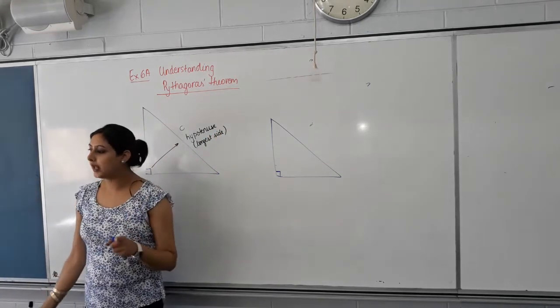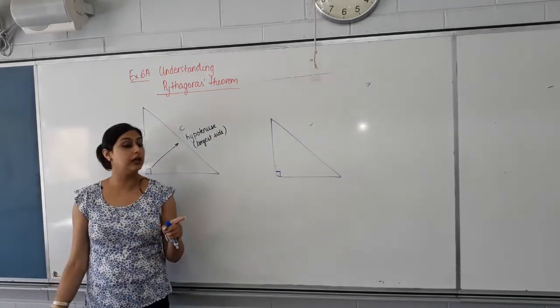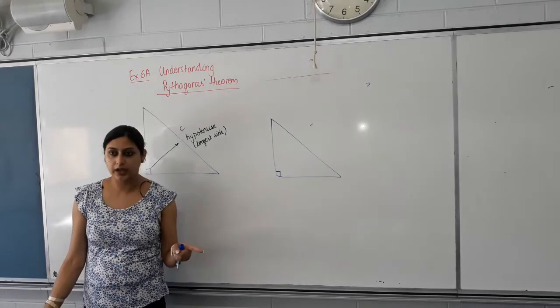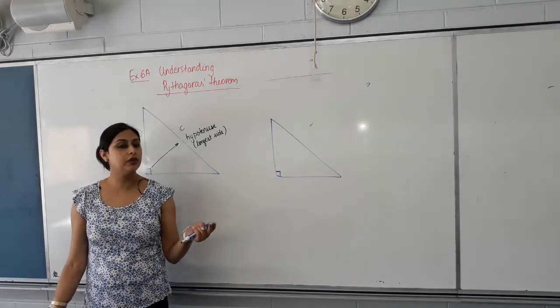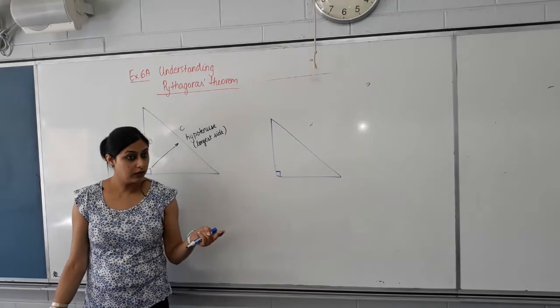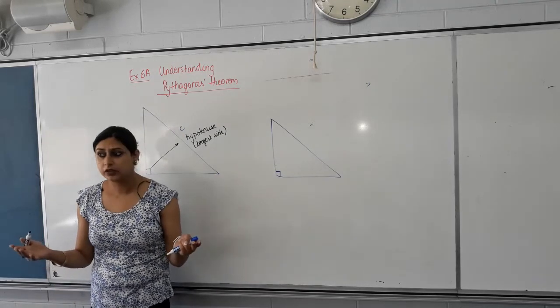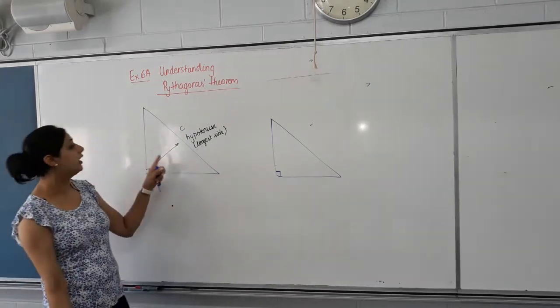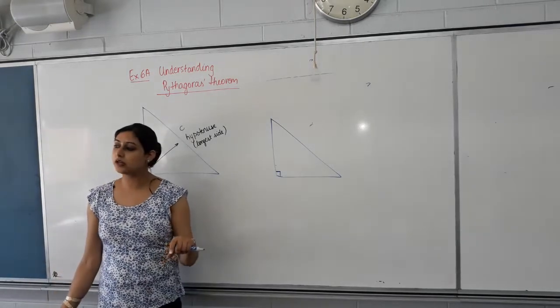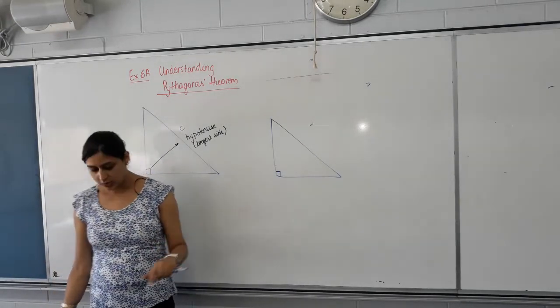So do we all know what a right angle triangle is? The triangle that has a 90 degree angle. Which side is the hypotenuse? One opposite to the right angle. Right angle. And is that the shortest side of the triangle or the longest side? Longest side. Awesome.